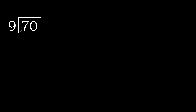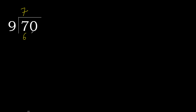70 divided by 9. 7 is less, therefore next. 70 is not less, therefore with 70 and 9, multiply by which number is nearest to 70 but not greater. 9 multiply by 8 gives 72, which is greater. Multiply by 7: 63 is not greater.